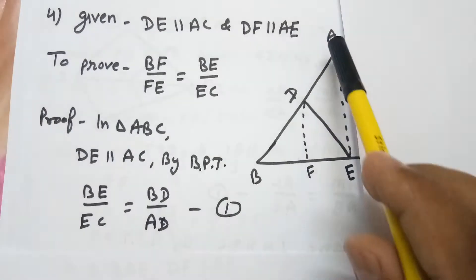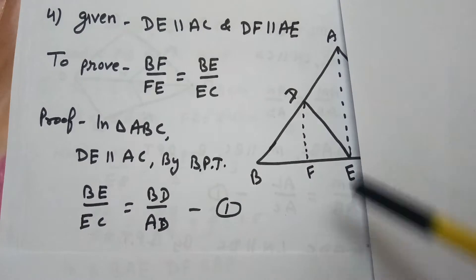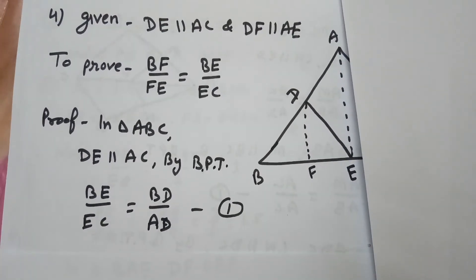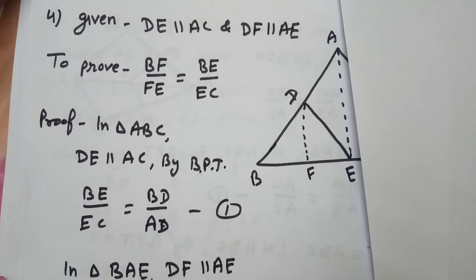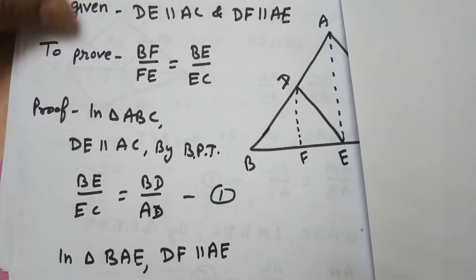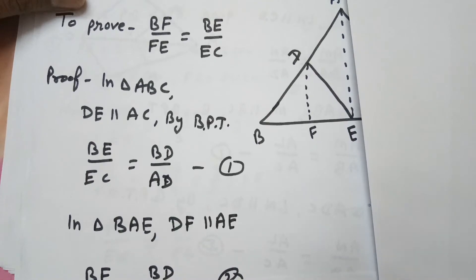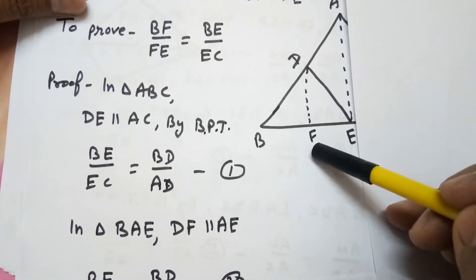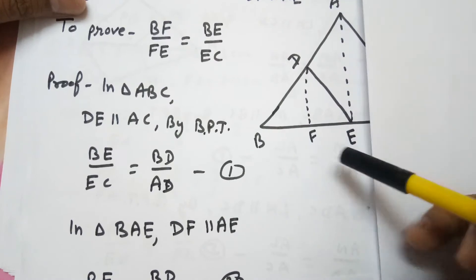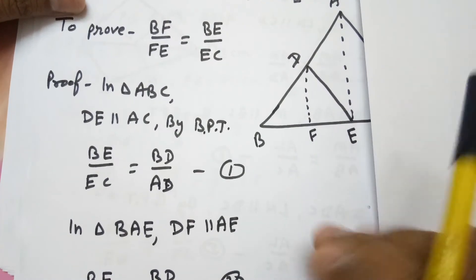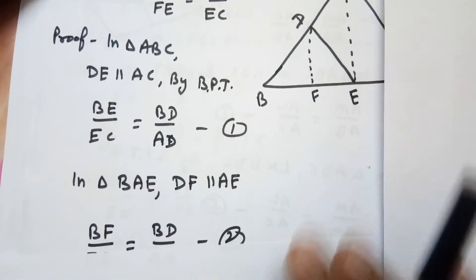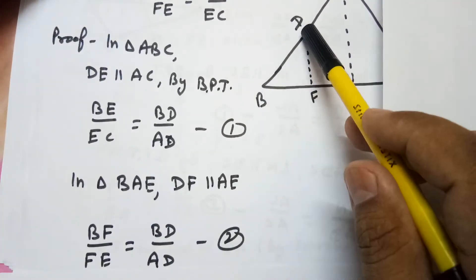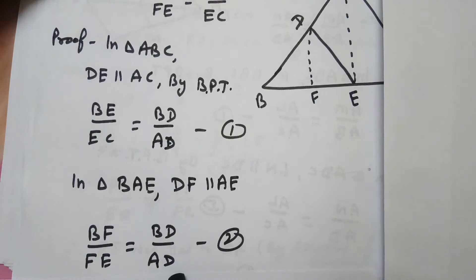Now we apply BPT a second time, this time in triangle ABE. Here, DF is parallel to AE, so by BPT we get: BF over FE equals BD over AD. This is equation two.